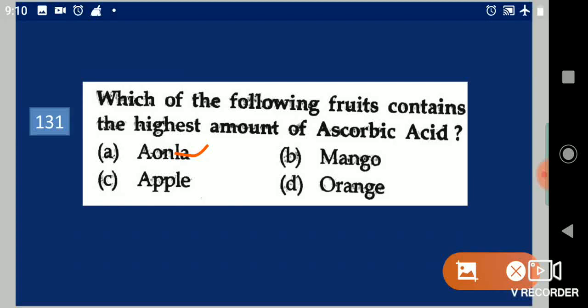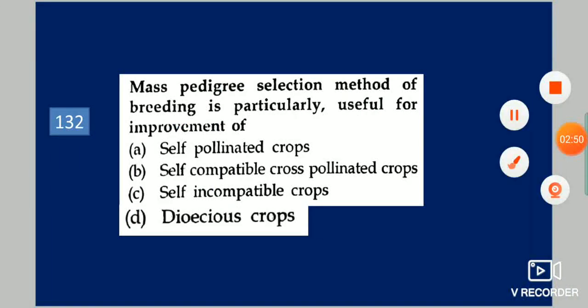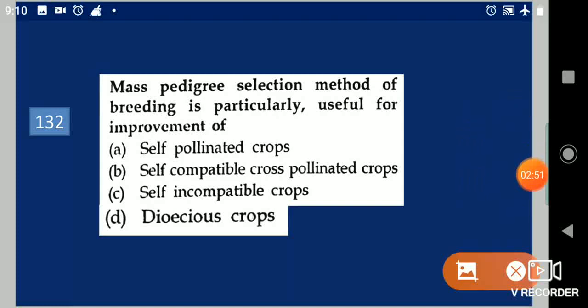Next question: Mass pedigree selection method of breeding is particularly useful for improvement of dash. Your options are: self-pollinated crops, self-compatible cross-pollinated crops, self-incompatible crops, dioecious crops. Your answer is self-pollinated crops.